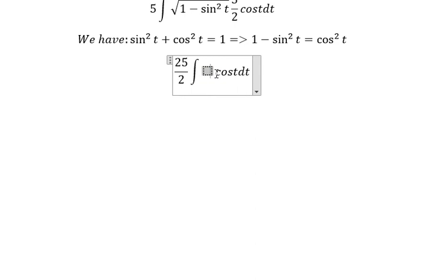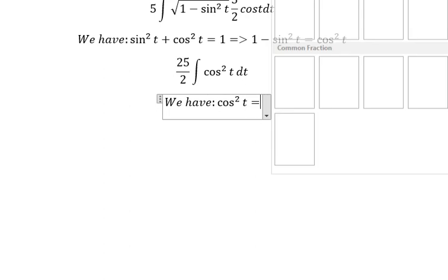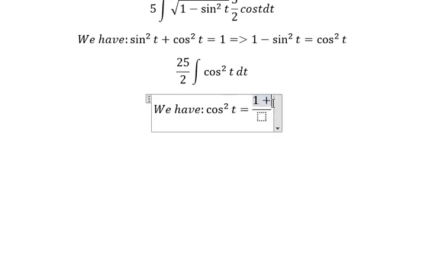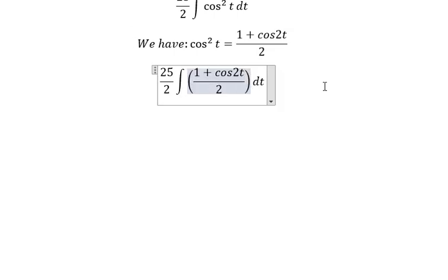cos²(t) is equal to (1 + cos(2t))/2. We have 2 multiply with 2, you got 25/4.